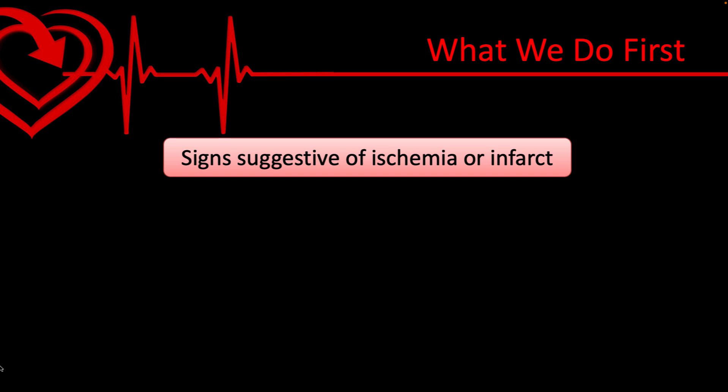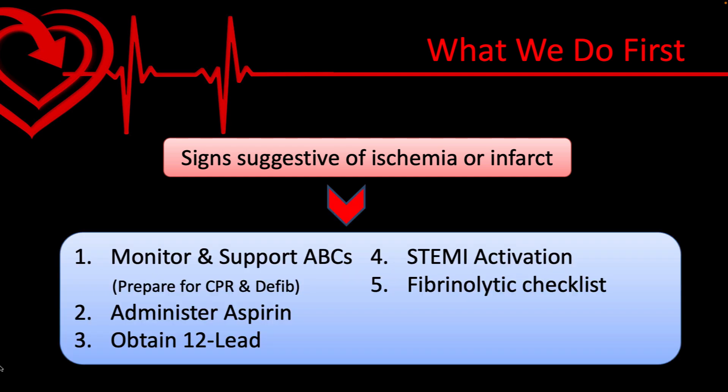The ACLS algorithm for acute coronary syndromes begins with basic care during assessment. If our patient has the signs and symptoms outlined earlier, we need to monitor and support airway, breathing, and circulation. We should be ready to do CPR if needed and ready to do early defibrillation if necessary. We should administer aspirin, get a 12-lead early in the process, and if we find evidence of a STEMI, that activation should happen early as well.